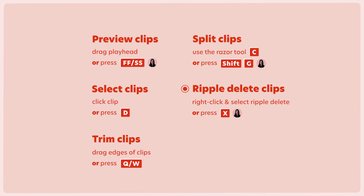Finally, I want you to practice ripple deleting clips on your timeline, which you can do by right-clicking a clip and selecting Ripple Delete, or you can press my custom keyboard shortcut X when you've got the clip selected.